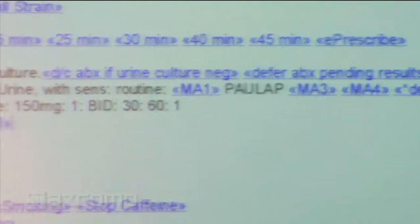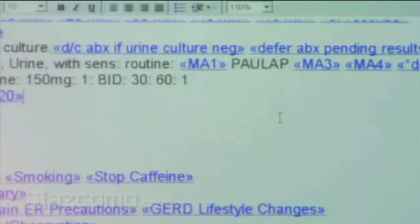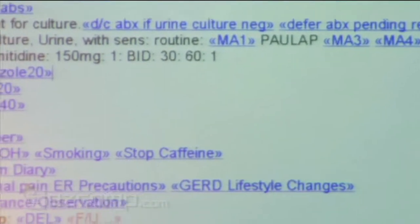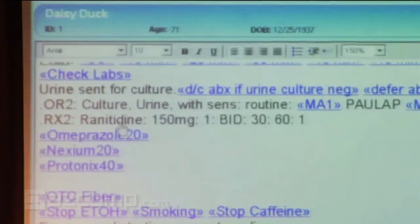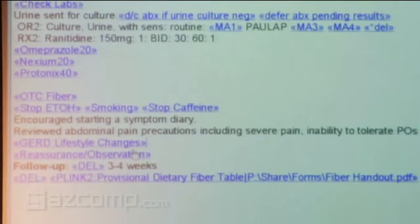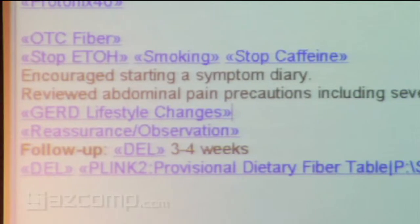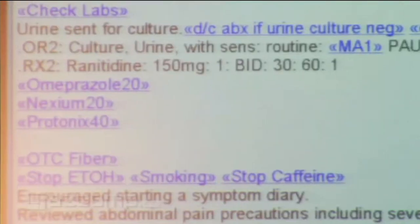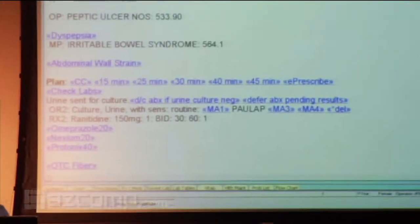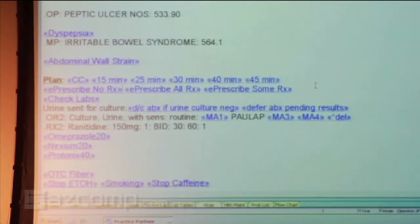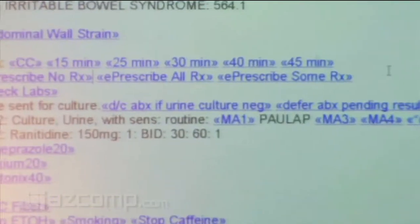And on the plan, you can pick specific medications and send a message. When she's clicked on Paula there, that's going to send a message to Paula when I close my note that the urine sample needs to be sent for a culture. And abdominal pain ER precautions — that is a phrase that I might say over and over that I don't have to write out anymore. It's already written there. This is so quickly customizable. If you don't like the way it's written, go up to the quick text and edit it — it takes about 30 seconds.